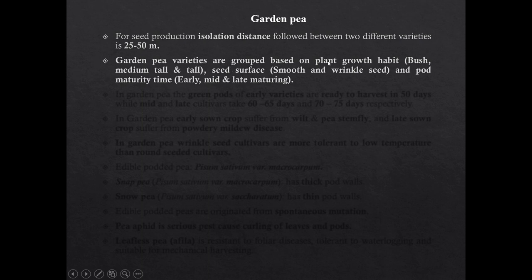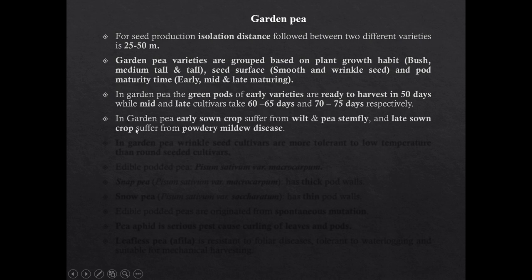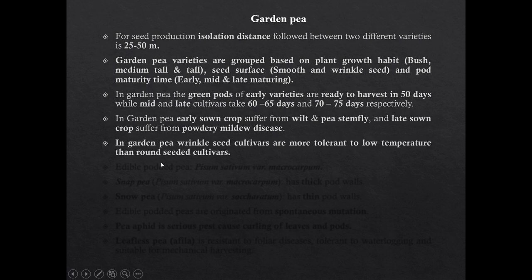Garden pea varieties are grouped on the basis of plant growth habit, seed surface and pod maturity. Based on plant growth habit, cultivars are bushy, medium tall and tall. Based on seed surface, cultivars are smooth/round seeded or wrinkled seeded. In early maturing varieties, pods are ready for first picking in 50 days. For mid and late maturing cultivars, pods are ready in 60 to 65 days and 70 to 75 days respectively. Important point: the early sown crop suffers from wilt and pea stem fly, while the late sown crop suffers from powdery mildew. Wrinkled seeded cultivars are more tolerant to low temperature compared to round seeded cultivars.